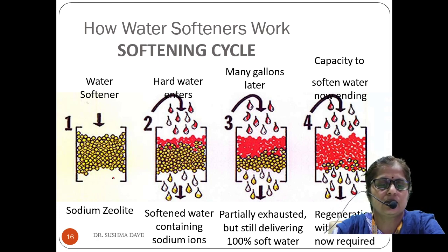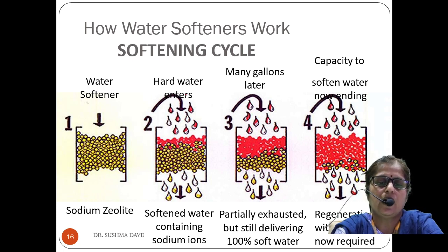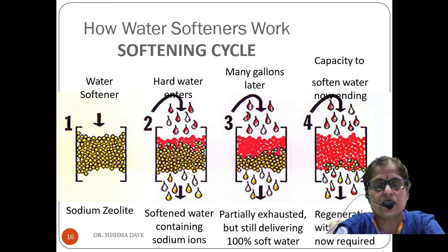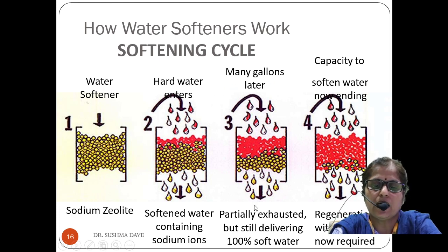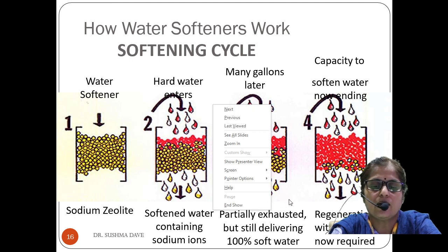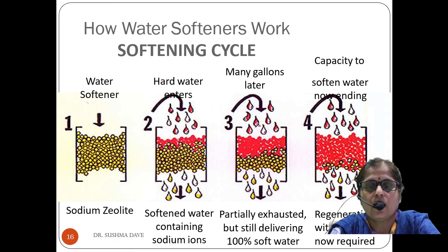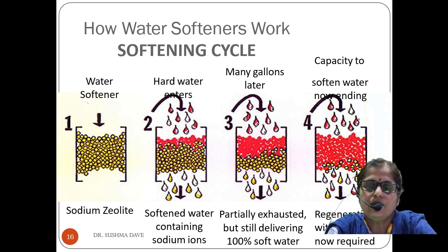The yellow-colored granules represent sodium zeolite. When hard water enters, it contains red-colored particles representing calcium and magnesium ions. Once these move towards the zeolite, replacement takes place and sodium ions are displaced by calcium or magnesium ions. As many gallons of water are passed through the zeolite bed, it becomes slowly exhausted. At the partially exhausted stage it is still delivering 100% soft water, but when all active sodium sites are completely used up, regeneration is required.